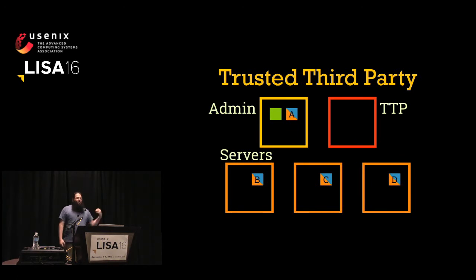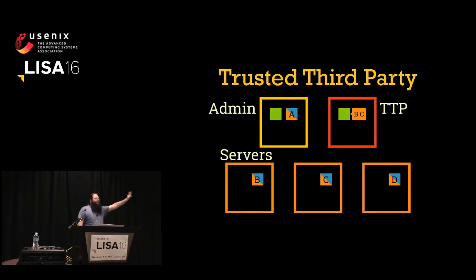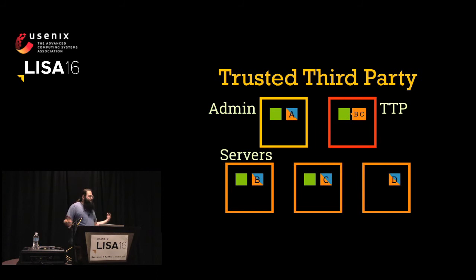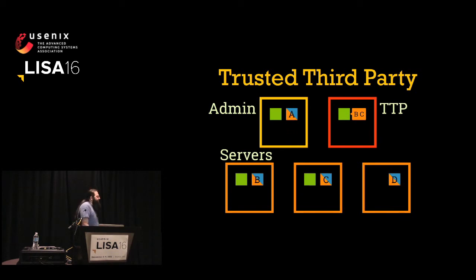In a trusted third party system, we have a secret and authentication credentials. As the admin, I send the trusted third party a secret — there's no real pre-encryption; the trusted third party knows the secret in the clear. But we give it a policy saying only credentials B and C should have access. Trusted third parties are effectively a silo of secrets. Their advantage is they work well with auto-scaling and self-healing systems, because you don't need to pre-generate encrypted copies for servers that don't exist yet.